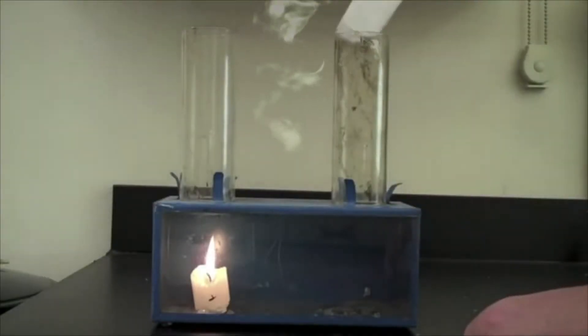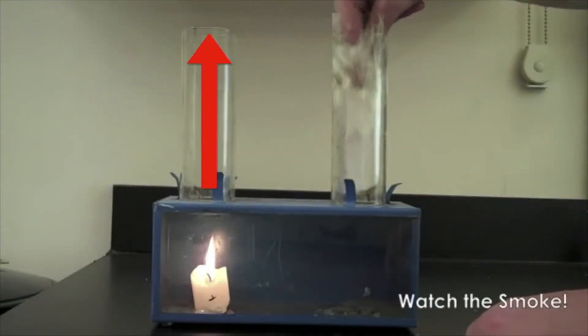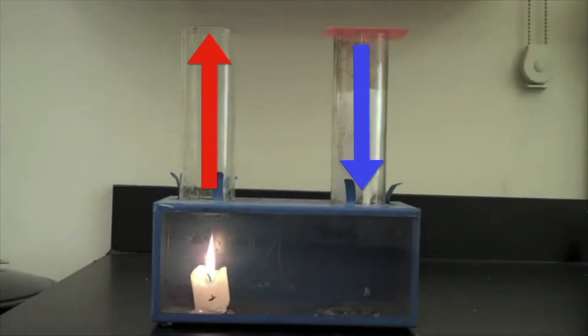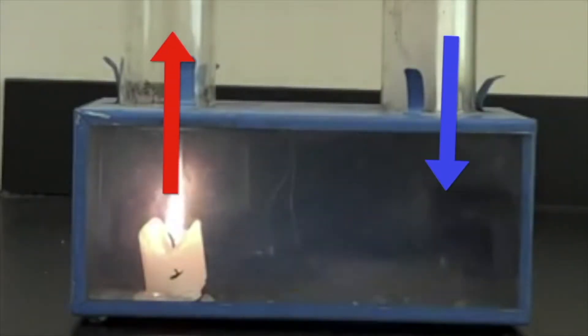This experiment demonstrates convection due to differences in air temperature. The air heated by the candle rises up the chimney, pulling air down the other chimney. The smoke shows the convection currents in the box as cold air moves toward the warmer air. You can see the colder, dense air moves down while the warmer, less dense air moves up.